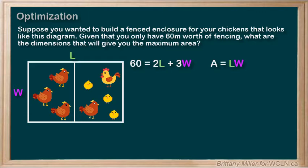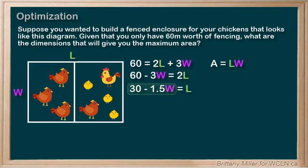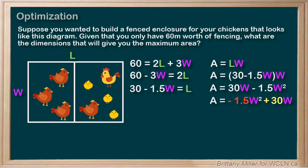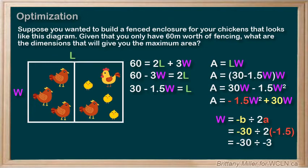Let's do some algebra. 60 minus 3W equals 2L, so 30 minus 1.5W equals L. So if L equals 30 minus 1.5W, then A equals that times W. If we expand this, we get A equals 30W minus 1.5W squared. Rearranging, we have A equals negative 1.5W squared plus 30W, which is a quadratic in standard form. We can find the vertex — which will be the maximum — using W equals negative B over 2A, which is negative 30 over 2 times negative 1.5, which equals 10.